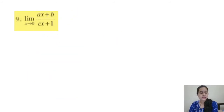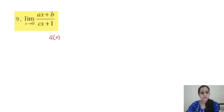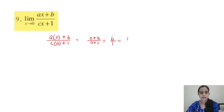Question 9: limit x tends to 0, (ax + b)/(cx + 1). This is a direct substitution question. Substituting x = 0: (a×0 + b)/(c×0 + 1) = b/1 = b. The answer is b.